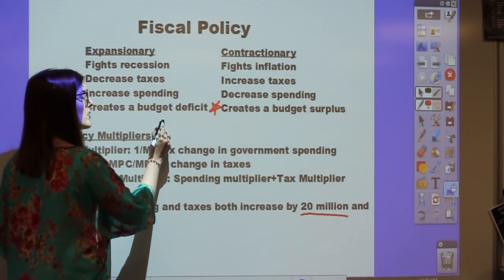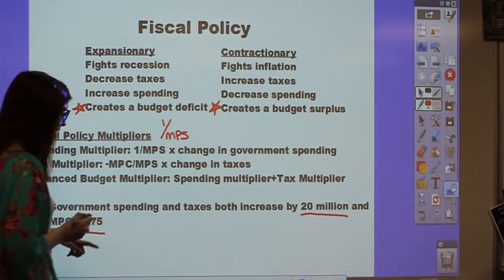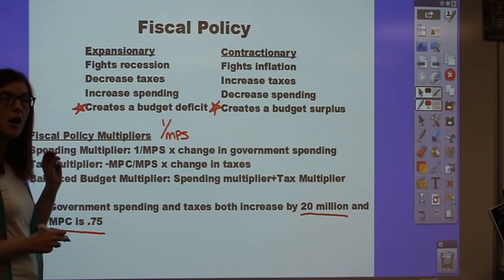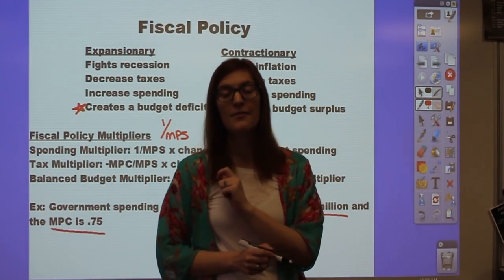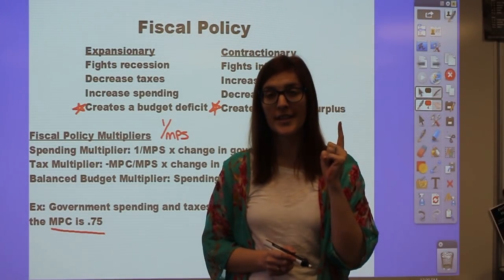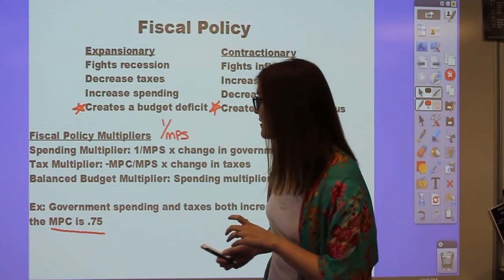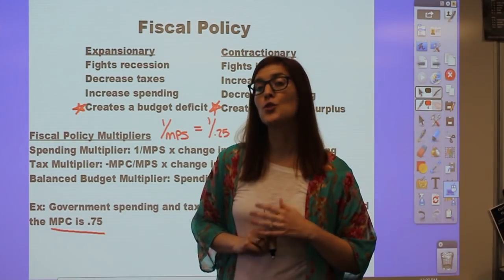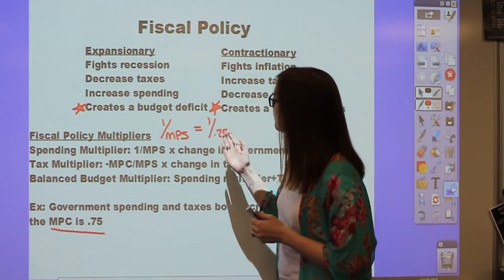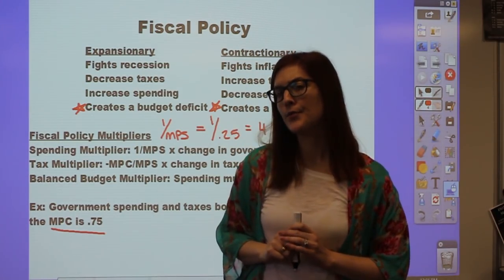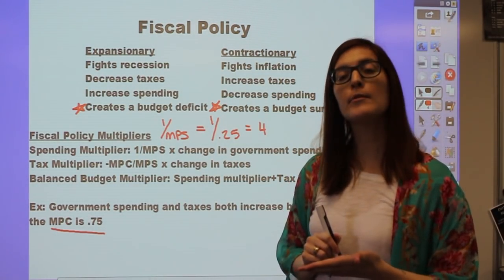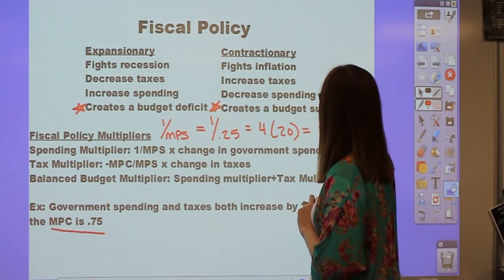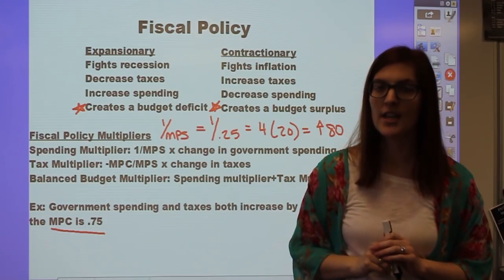The spending multiplier shows how much government spending changes GDP. Its formula is 1 over MPS. Since MPC is 0.75, MPS must equal 0.25—consuming 75 cents and saving 25 cents of each additional dollar. So the spending multiplier is 1 over 0.25, which equals 4. Multiplying by the $20 million increase in government spending, GDP will increase by $80 million because of the change in government spending.